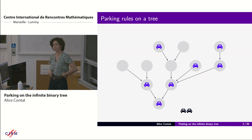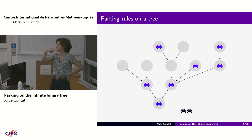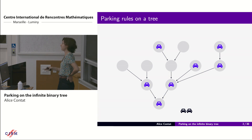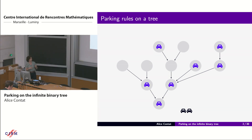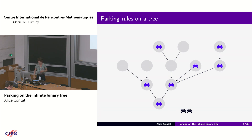The rules are clear: we start from the bottom and park the cars layer by layers. This is important for the infinite tree, but when the tree is finite there is an abelian property — you can park the cars in any order you want and you will always get the same final configuration. The occupied spots will be the same and the number of outgoing cars will be the same.